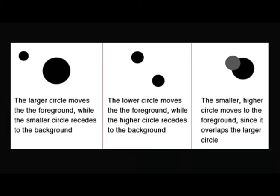A larger circle is usually seen as moving toward the foreground, whereas smaller circles recede into the background. Similarly, a lower circle is supposed to be on the ground in the foreground, whereas a higher circle is supposed to be receding into the background. So positioning of very simple shapes like circles and how far they are located from each other can tell you something about their activity and their common fate.